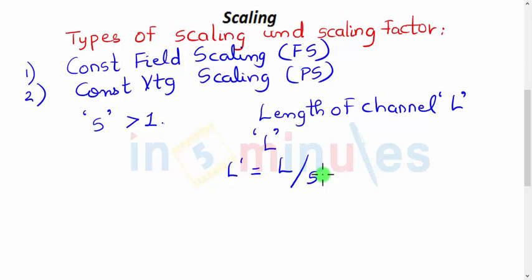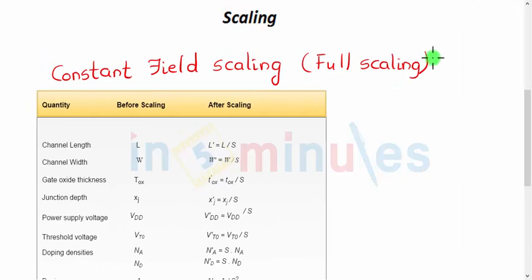Let's first start with constant field scaling. As the name suggests, it's full scaling, meaning all the parameters are scaled. For example, the channel length L, after scaling is L by s, and s is greater than 1, so the length effectively has reduced. Similarly, channel width after scaling is W by s, gate oxide thickness TOX after scaling is TOX by s, junction depth XJ after scaling is XJ by s.